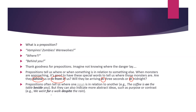Prepositions often tell us where one noun is in relation to another. Example: 'The coffee is on the table beside you.' But they can also indicate more abstract ideas such as purpose or contrast. For example: 'We went for a walk despite the rain.' These are also prepositions.